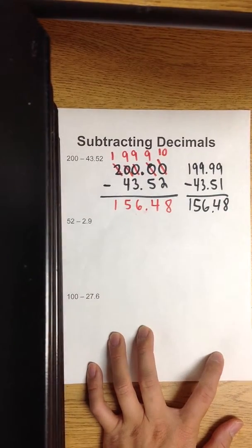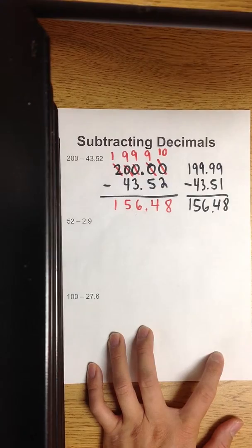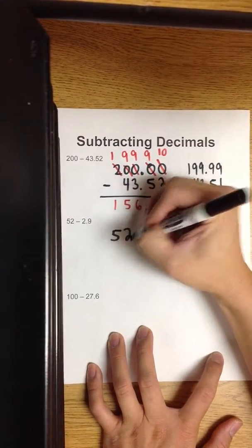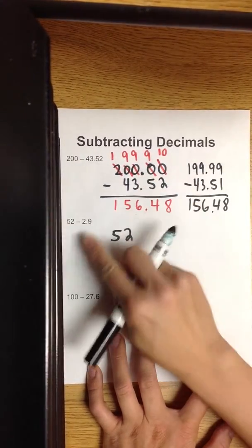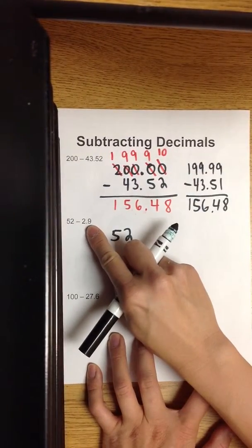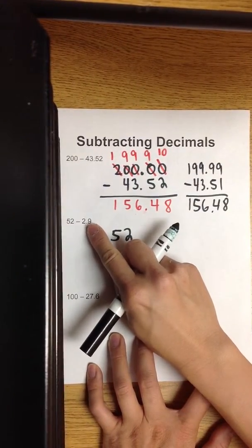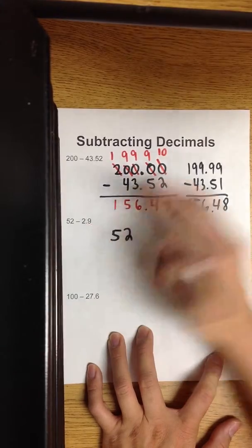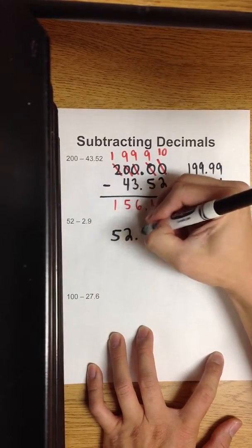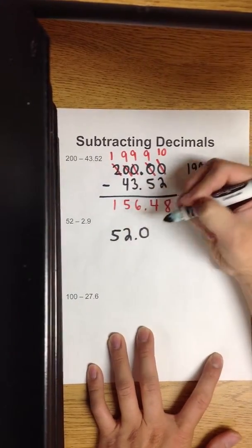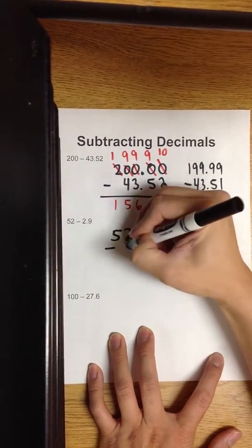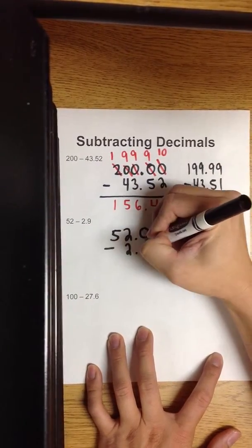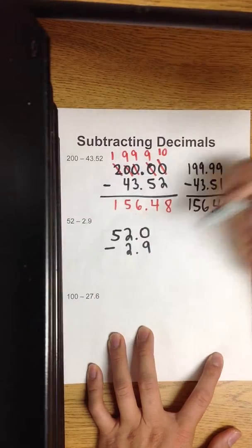Let's try the next example. We have 52 as a whole number, but it's in the tenths place, so we need to add one place value. Minus two and nine tenths.